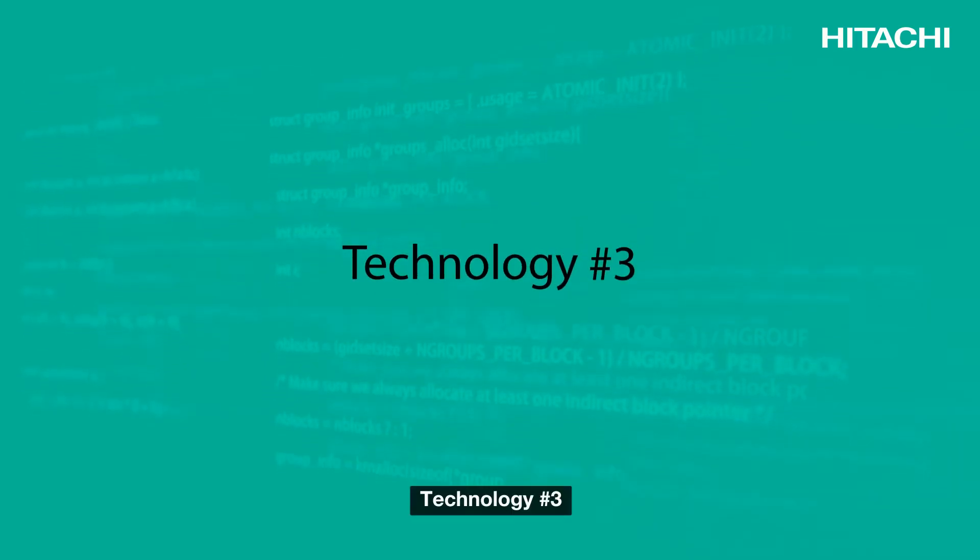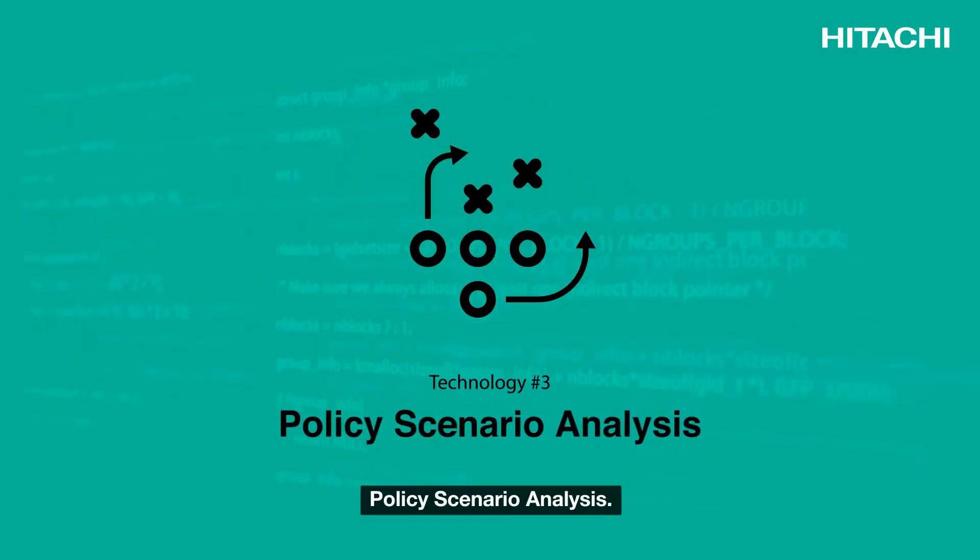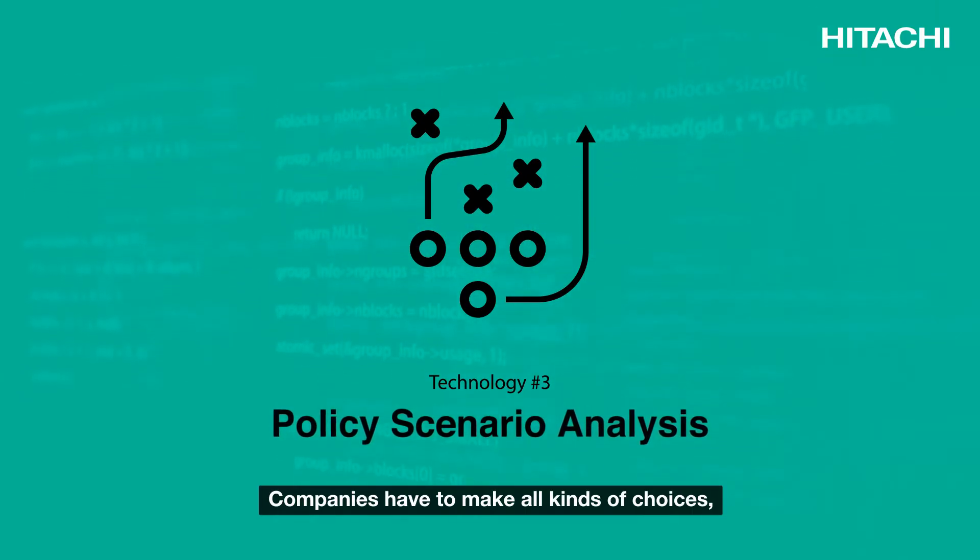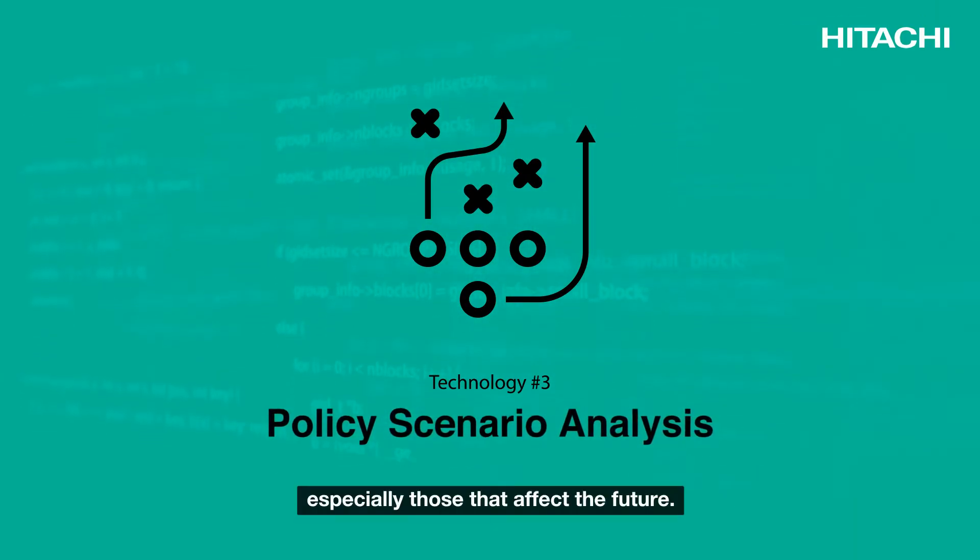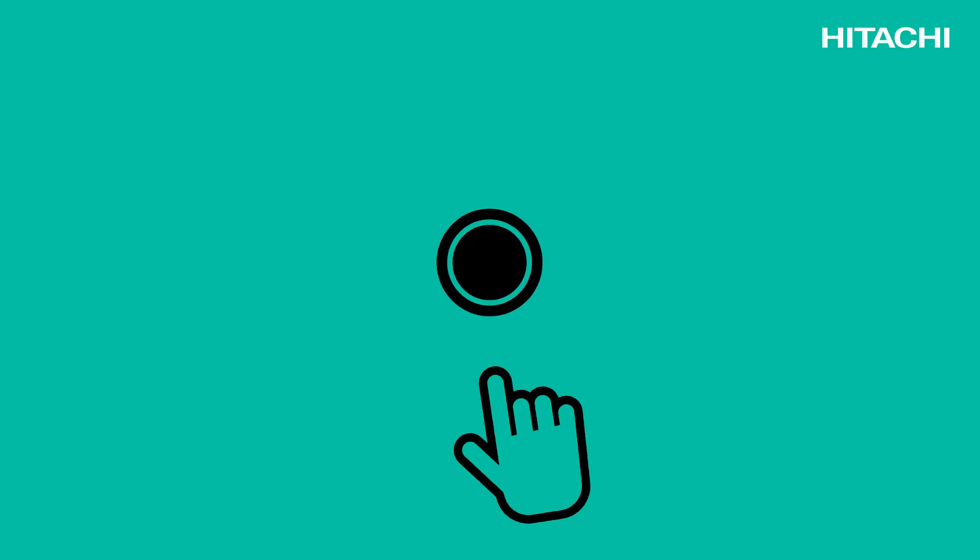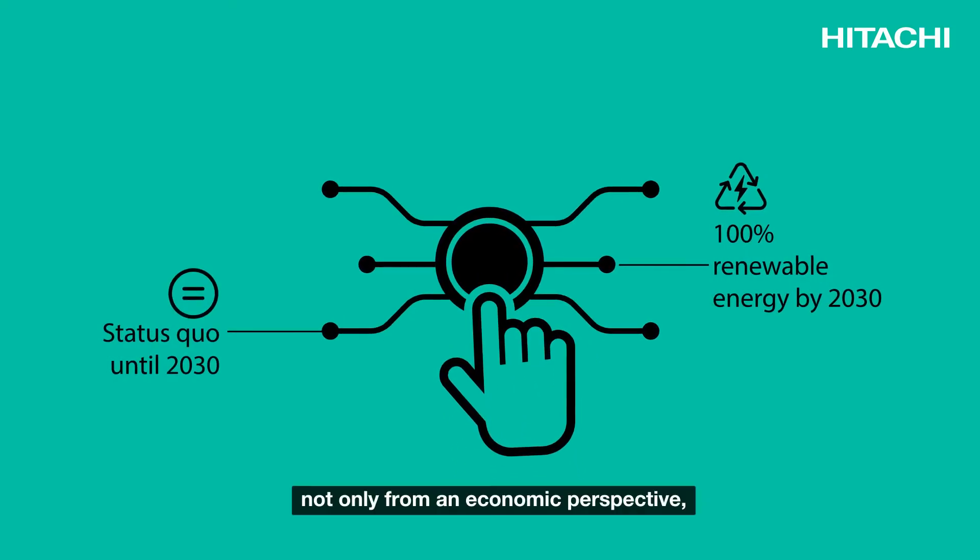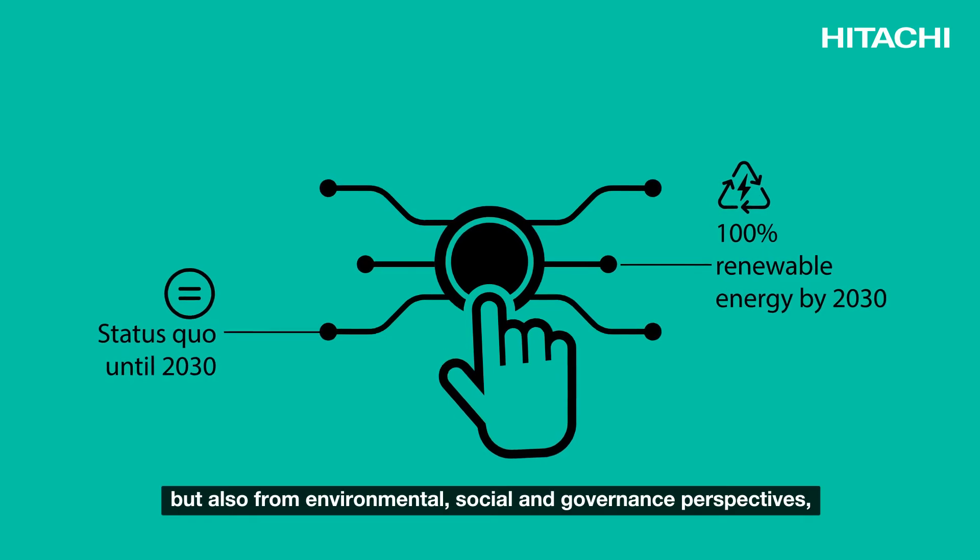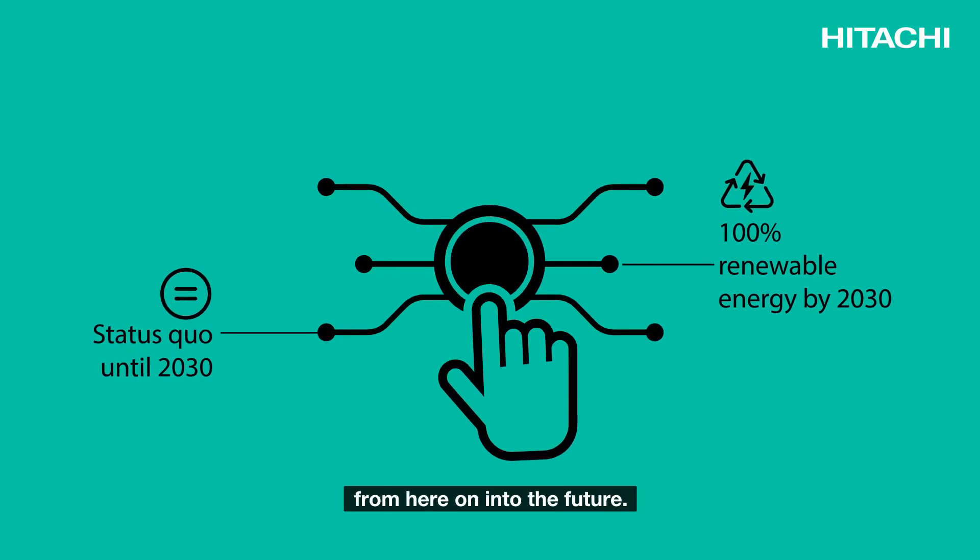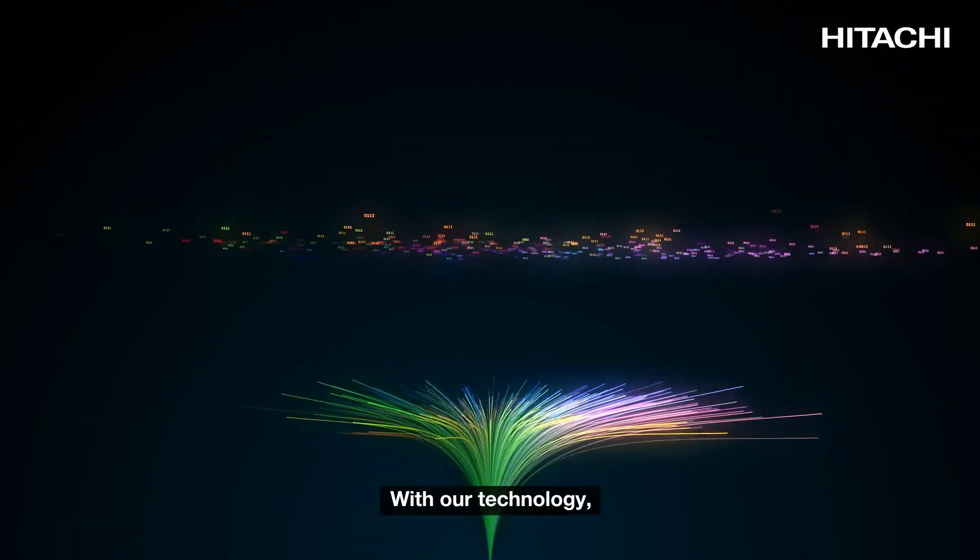Technology number three, policy scenario analysis. Companies have to make all kinds of choices, especially those that affect the future. The impact of these choices will affect companies in many ways, not only from an economic perspective, but also from environmental, social and governance perspectives, from here on into the future.